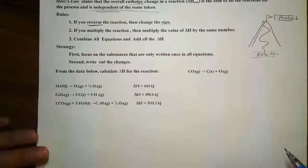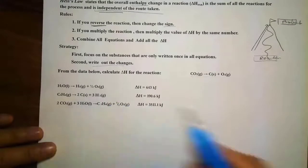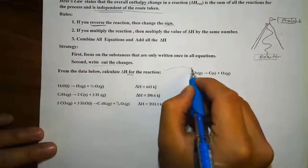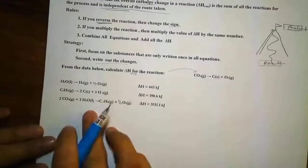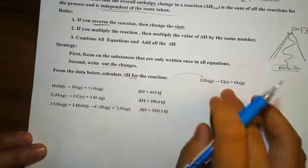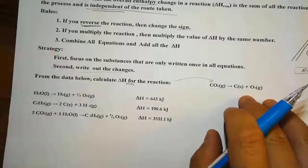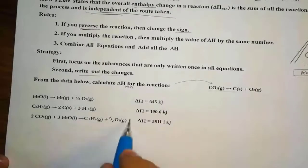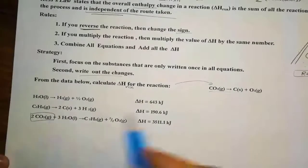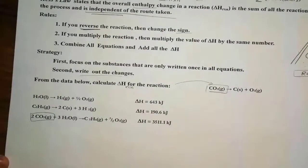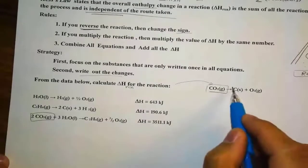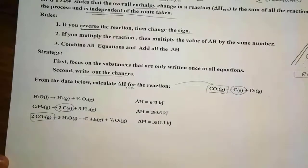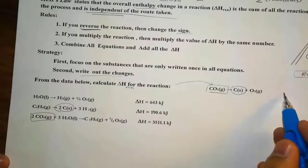Let's do one problem together. From the data below, calculate ΔH for the reaction. This overall reaction is what we want to get by combining all the given reactions. We notice that carbon dioxide appears only once across all equations, and carbon also appears only once. But oxygen appears in multiple places. Water is not in our overall reaction so we don't need to focus on it. We'll start with carbon dioxide and ignore oxygen since it appears in multiple places.